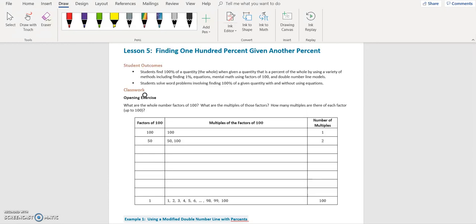Students find 100% of a quantity, which is a whole, when given a quantity that is a percent of the whole by using a variety of methods, including finding 1% equations, mental math using factors of 100, and double number line models. Students solve word problems involving finding 100% of a given quantity with and without using equations.